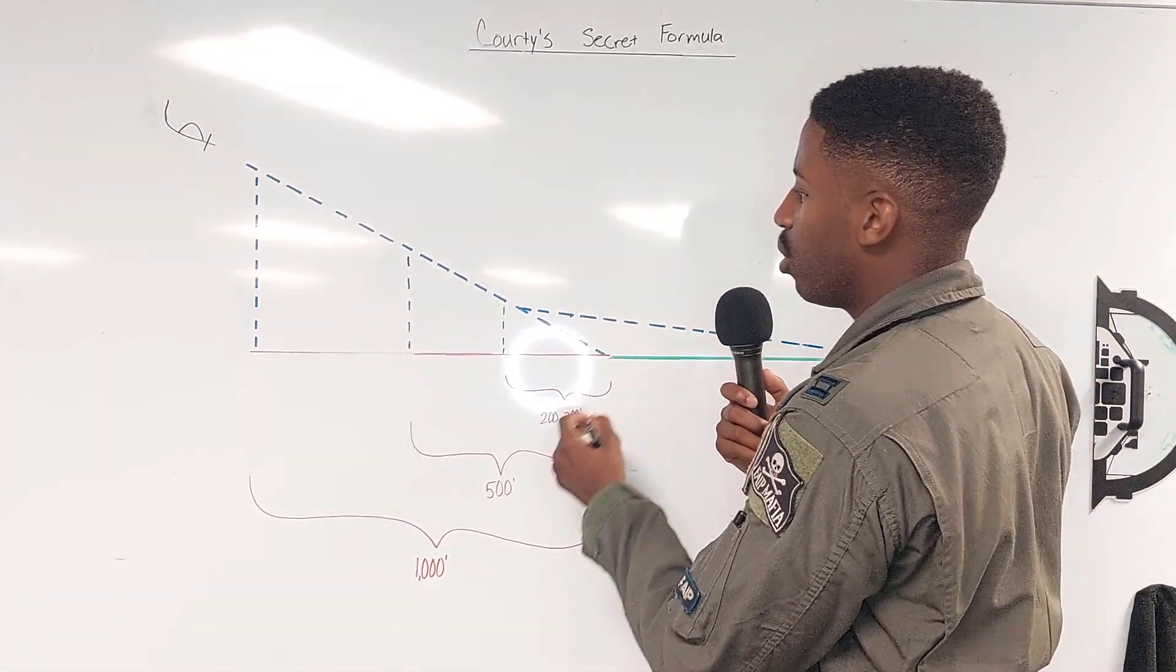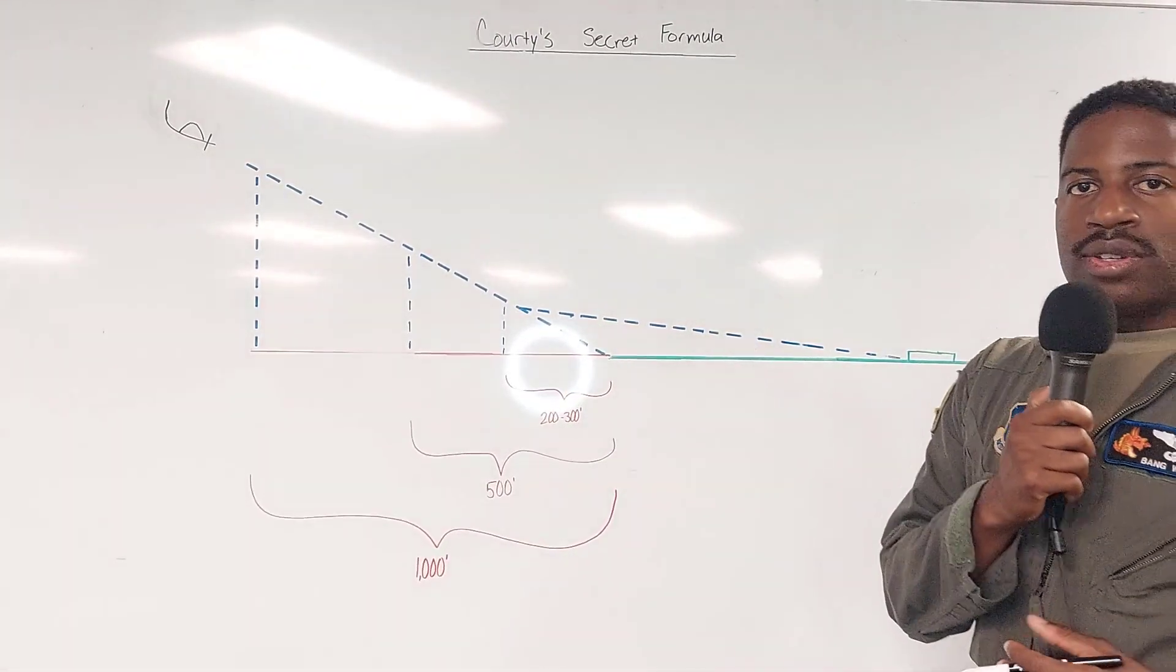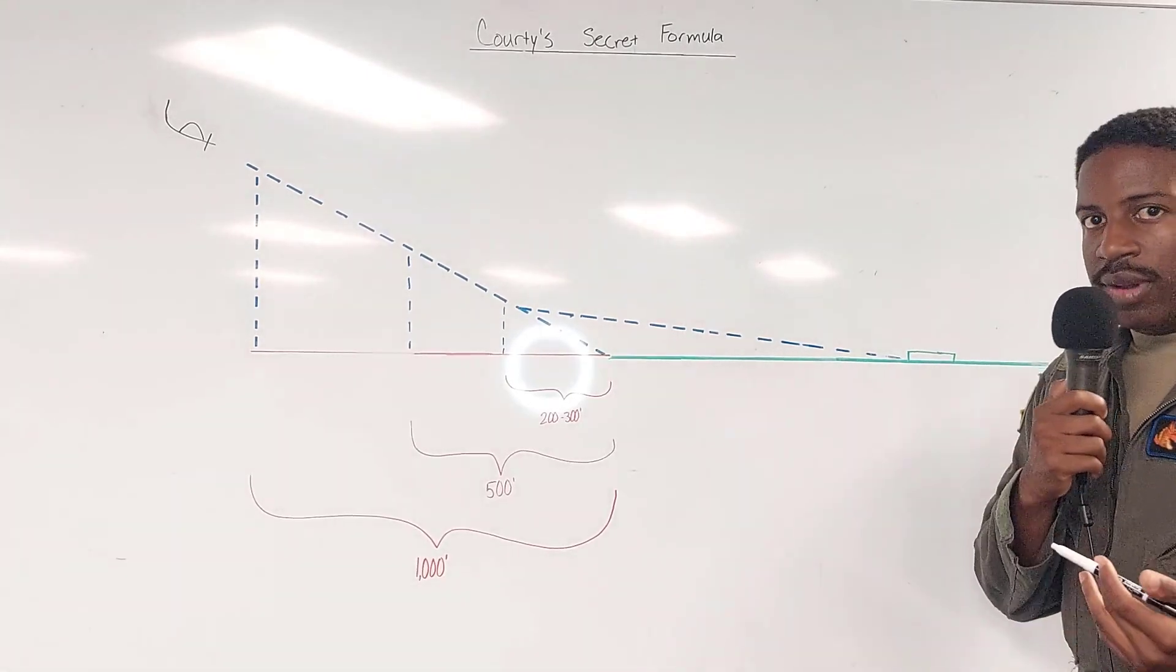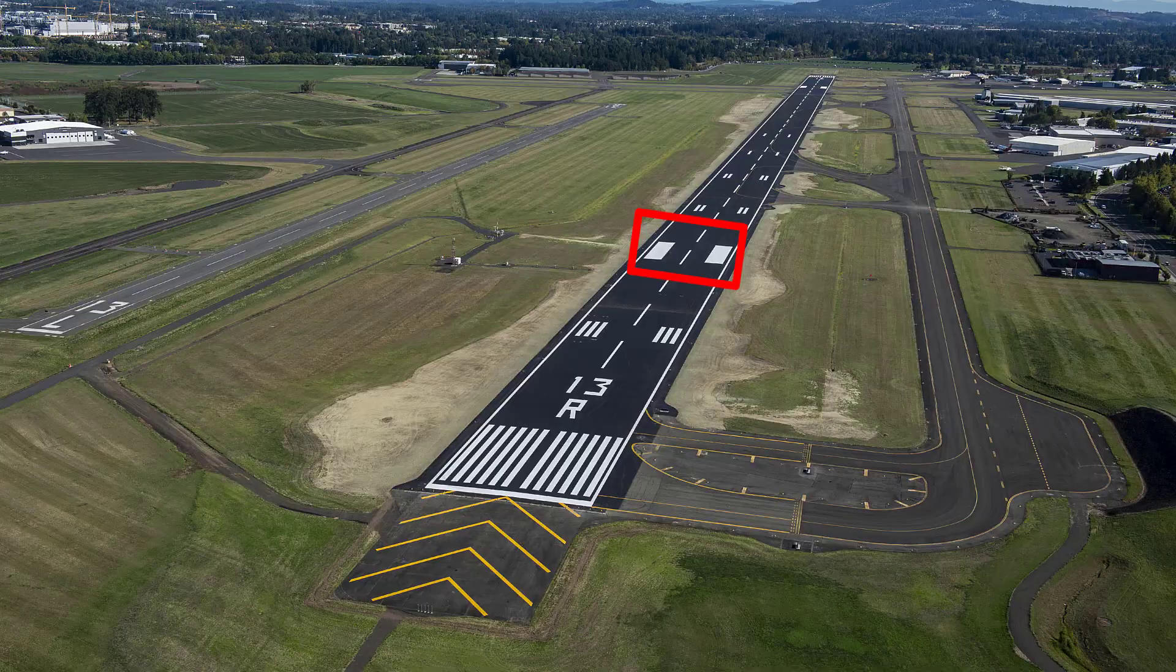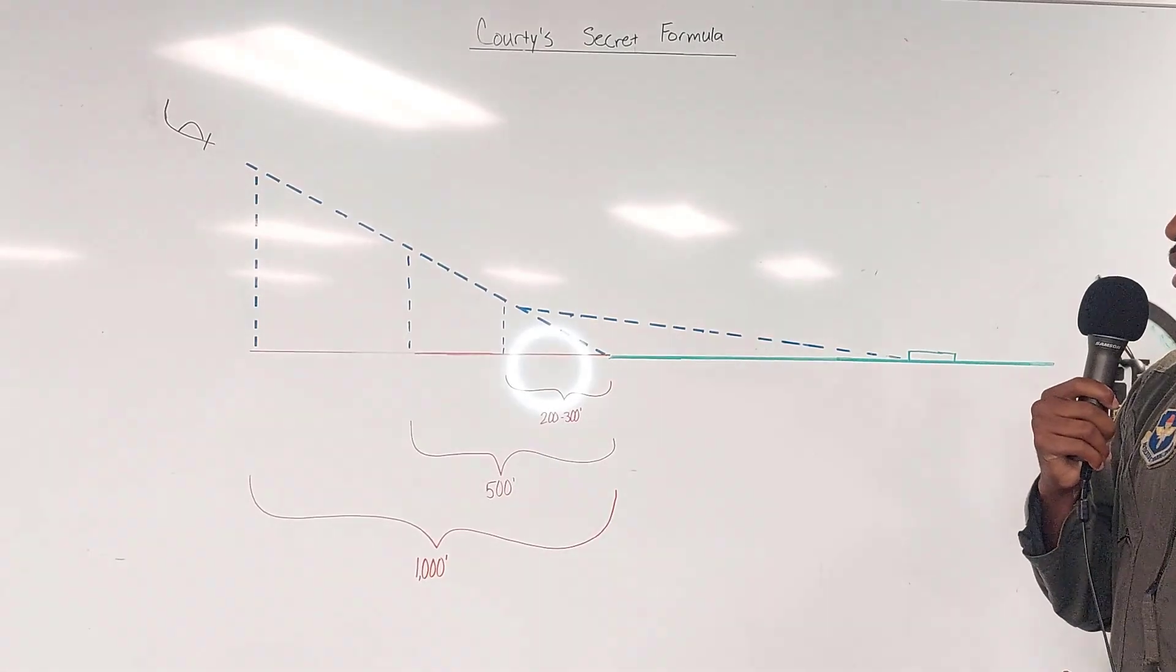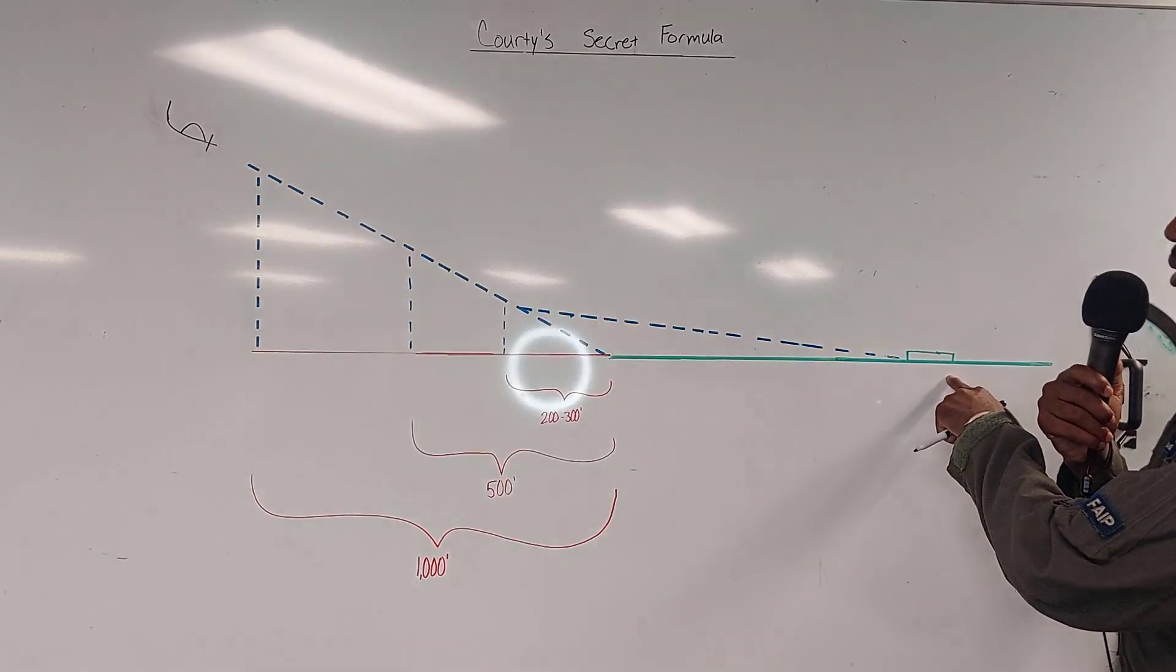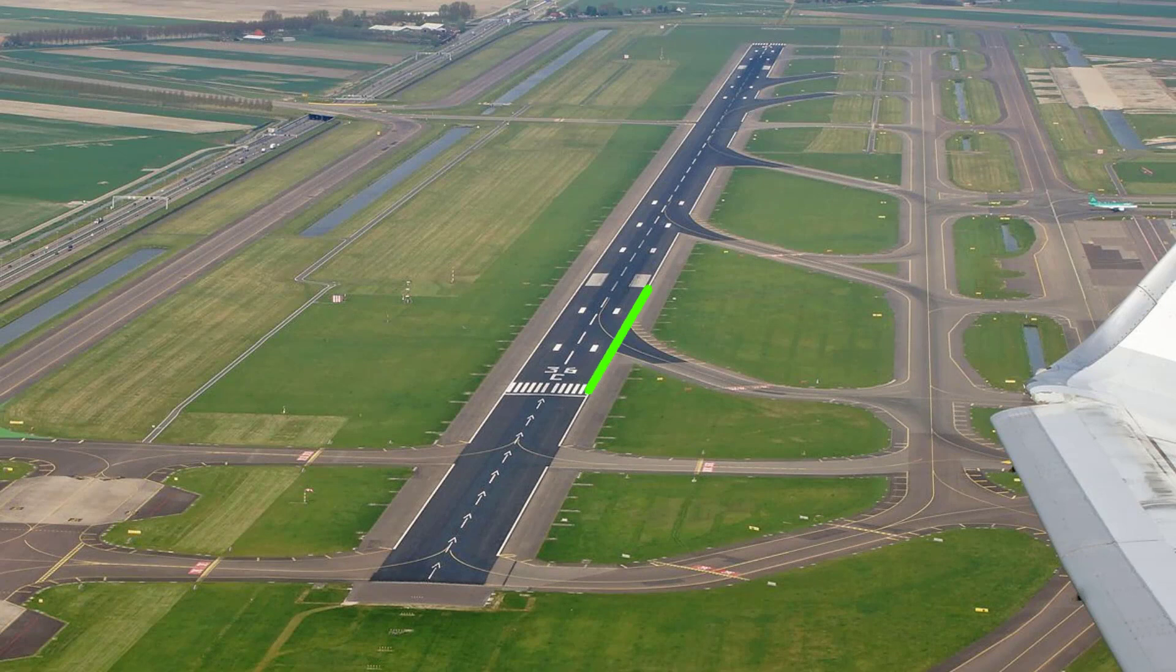What do I use? Most every runway will have captain's bars out here which is a reference to tell you that you're a thousand feet down the runway. So we can do at the perch as we look at those captain's bars and we kind of eyeball the distance from the captain's bars to the threshold.